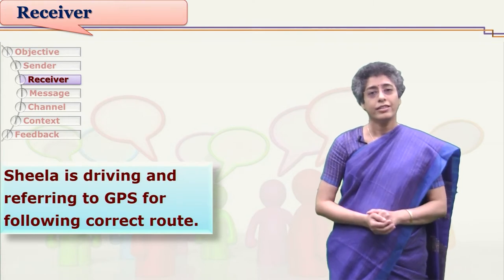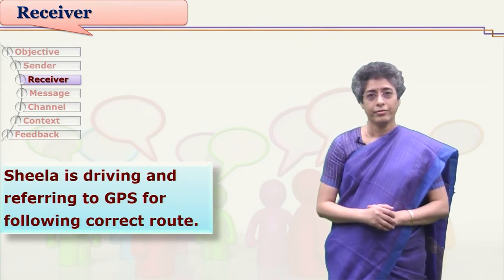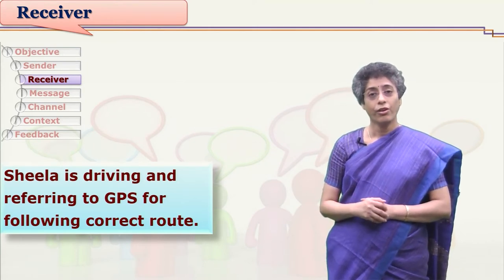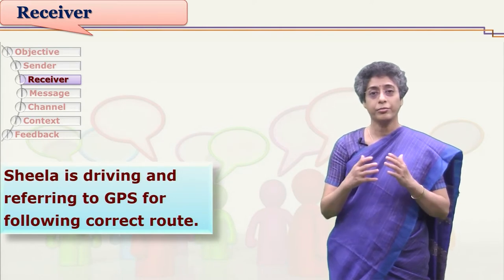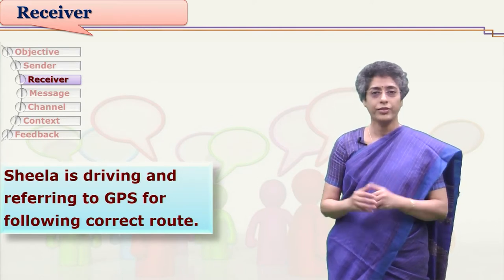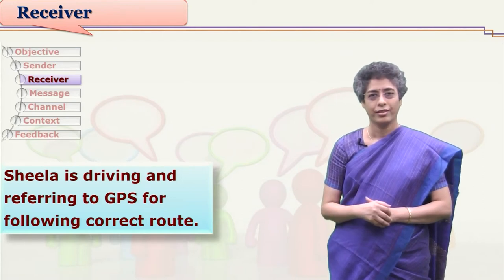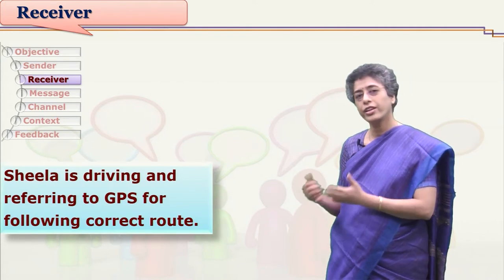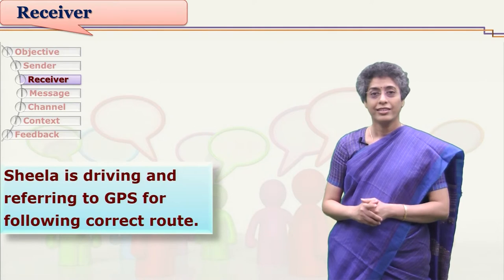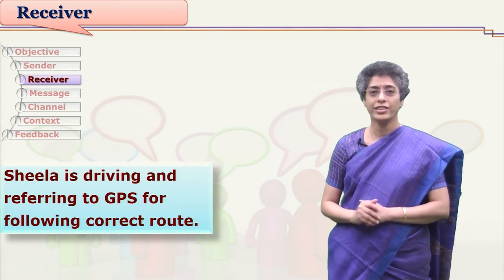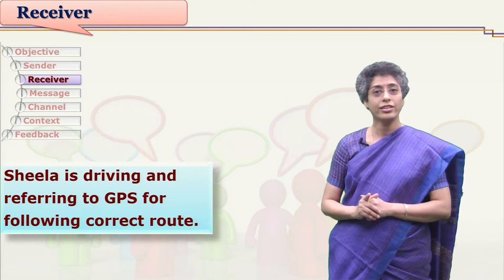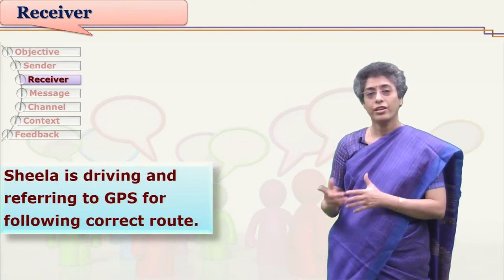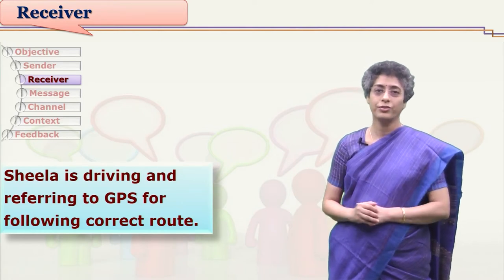Just as the sender can be a person or a system, even the receiver can be a person, a system, or a human being receiving messages from a system. For example, if Sheila is driving a car and referring to a GPS system, that GPS system is guiding Sheila — here Sheila is not receiving messages from other human beings but from a system. Sheila is the receiver of that message.